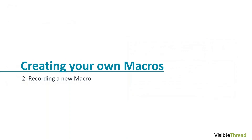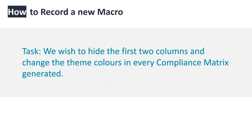Let's start recording our first macro. Let's imagine we want to hide the first two columns and change the color theme of every compliance matrix we generate. We're in a proposal management team, we love the compliance matrix, but those first two columns we never use. We often find ourselves hiding them and changing the formatting colors to match our corporate theme. We want to automate those tasks.